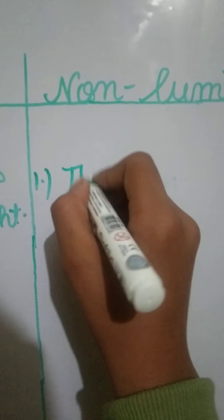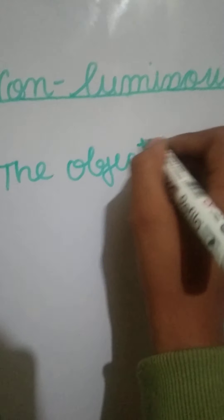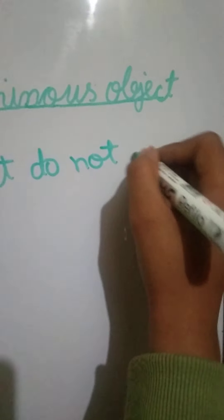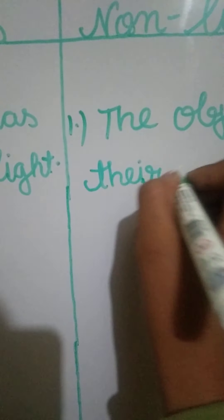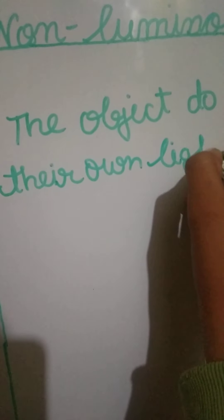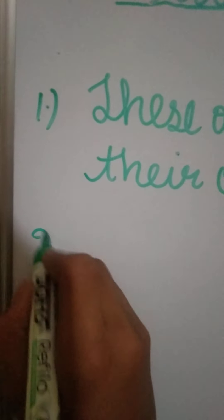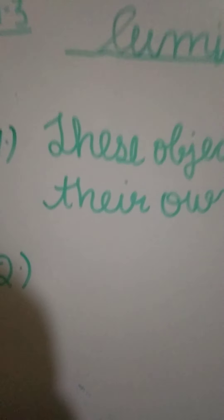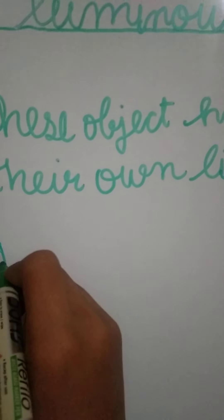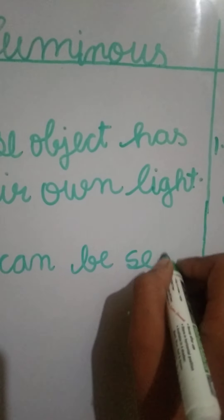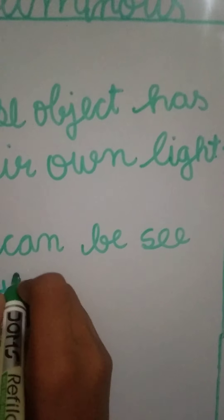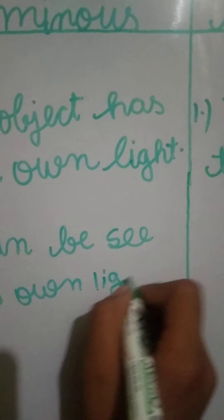First difference: a luminous object has its own light, but a non-luminous object does not have its own light. A luminous object can be seen by its own light.